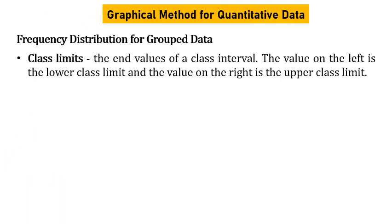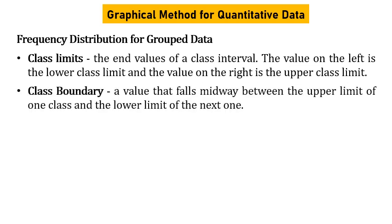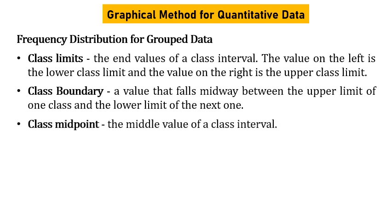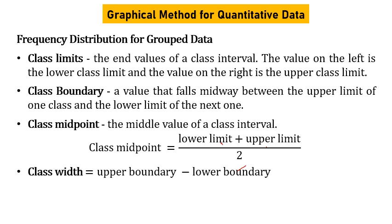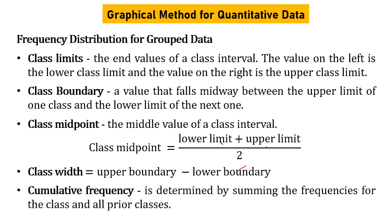Frequency distribution for grouped data. Class limit: the end value of a class interval. Class boundary: a value that forms midway between the upper limit of one class and the lower limit of the next class. Midpoint: the middle value of a class interval, calculated as (lower limit + upper limit) / 2. Class width: upper boundary minus lower boundary. Cumulative frequency is determined by summing the frequencies for the class and all prior classes.